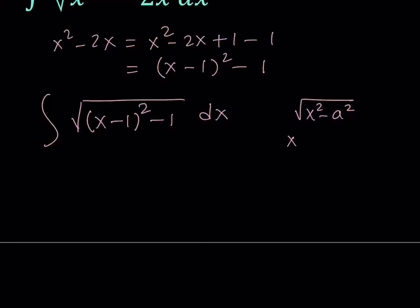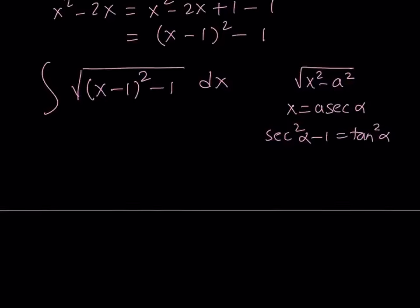For example, you can replace x with a times secant alpha. The good thing about that is that you're going to get secant squared minus 1, which is equivalent to tangent squared alpha. So we're going to be using that famous identity which comes from the Pythagorean identity.